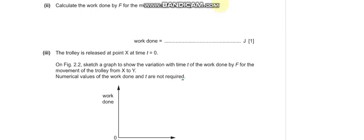Part 2: calculate the work done by force f for the movement of the trolley from X to Y. Work done equals force times distance. The forward force is 54 newtons and the distance is 9.5 meters, giving a work done of 510 joules.